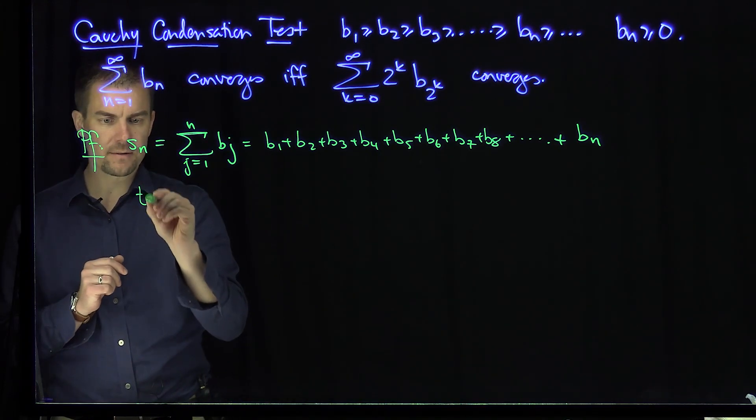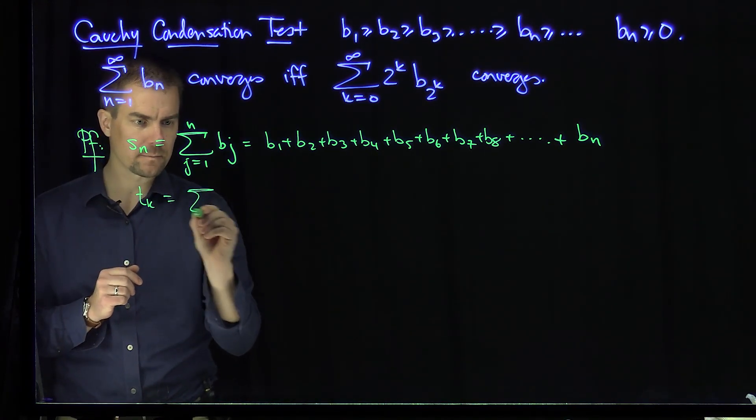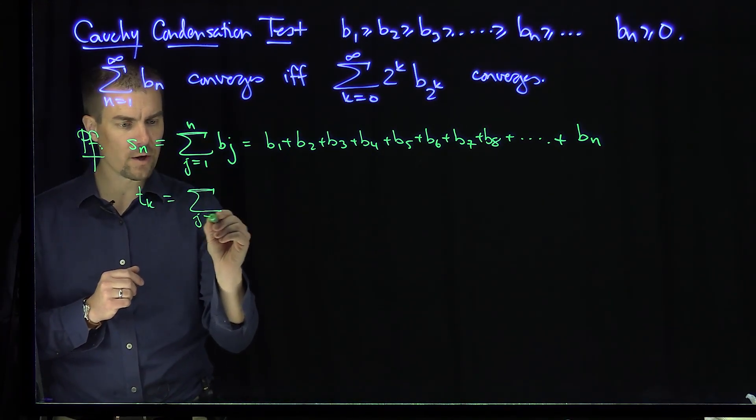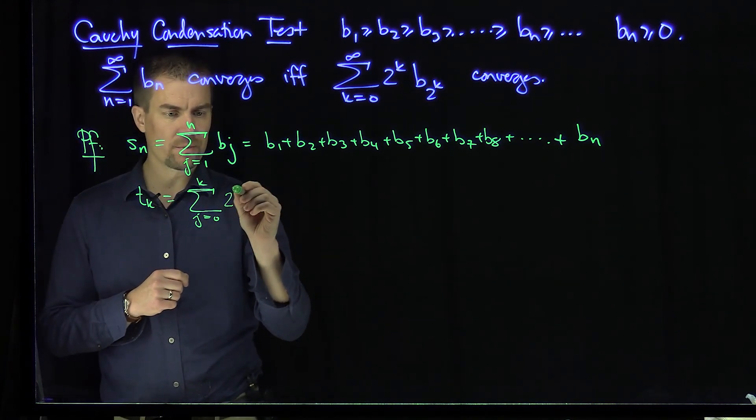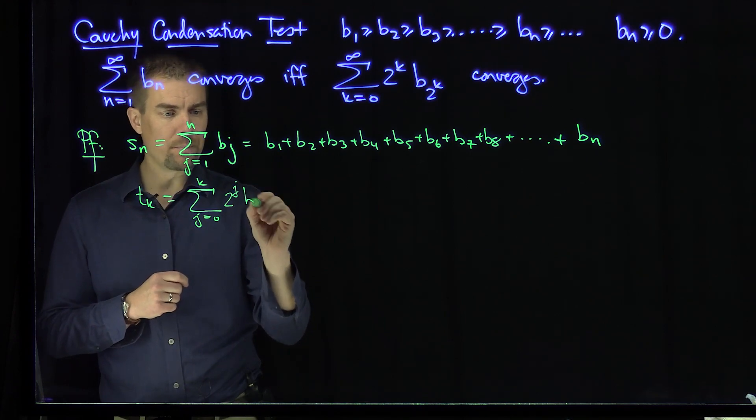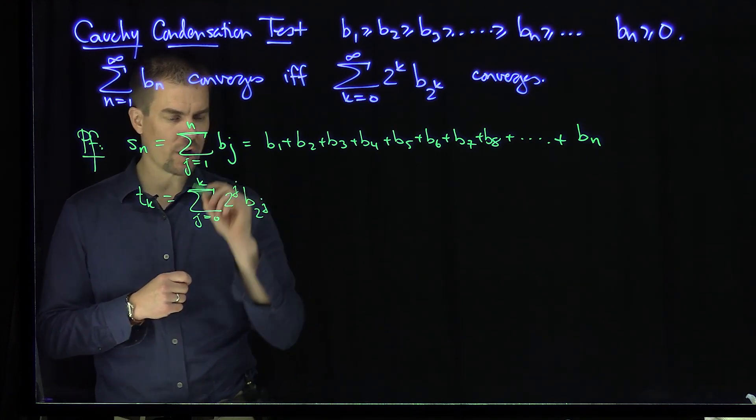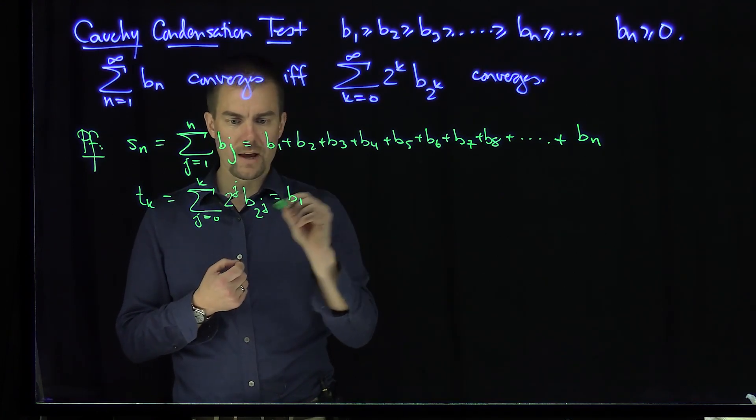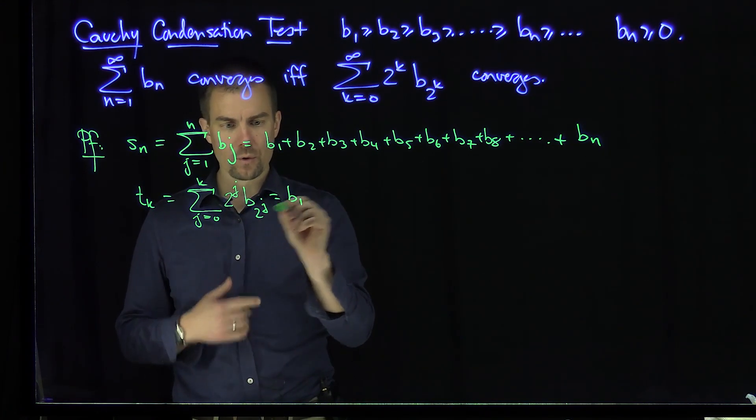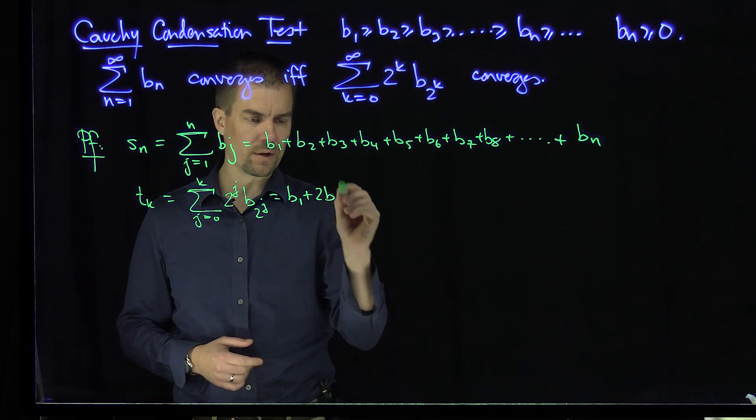Then we'll look at T sub k. T sub k will be the sum from j equals 0 to k of 2 to the power of j times B sub 2 to the power of j. So the first term we're going to see over here is just B1, that's good. Then when j equals 1, we're going to have two B2s, so 2B2,